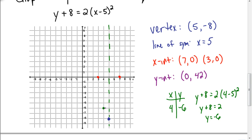I'm going to graph that point. The point (4, negative 6) is one unit to the left of the line of symmetry, so I'm going to reflect it — giving another point one unit to the right of the line of symmetry. Now I have 5 points total, which is enough to graph my parabola. And so my parabola will look something like that.